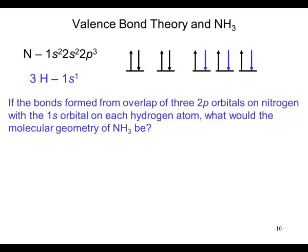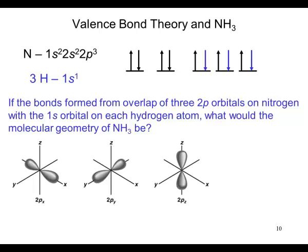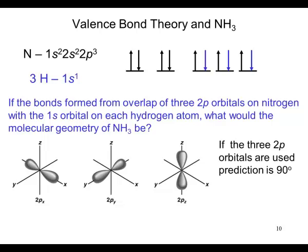If the bonds form from the overlap of these three 2p orbitals on nitrogen with the 1s orbital on each hydrogen, what would the molecular geometry of ammonia be? Well, the 3p orbitals are orthogonal to one another. The bond angle should be predicted to be 90 degrees.